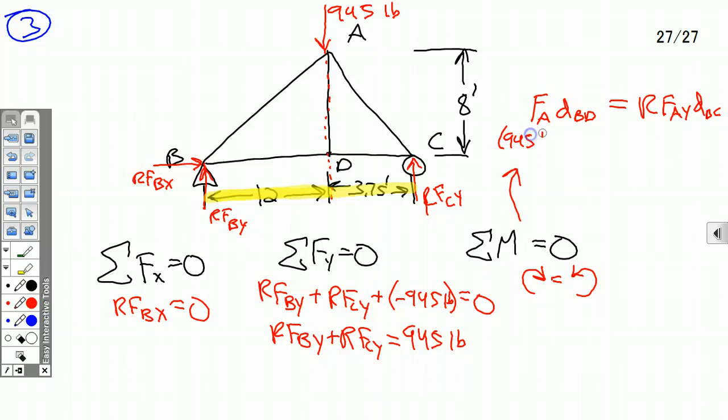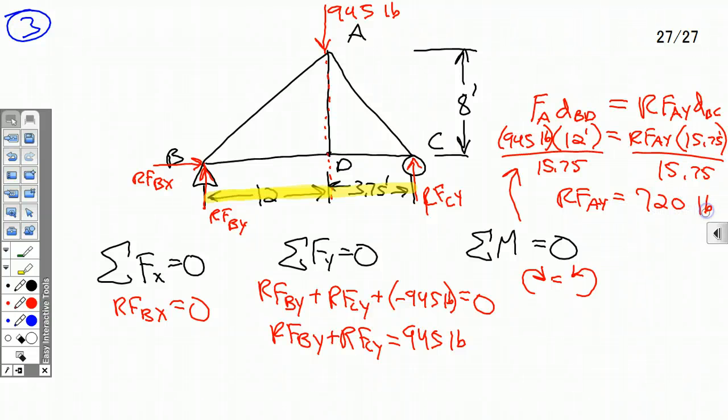Now let's plug in the numbers we know. We know this is 945 pounds. We know the distance from B to D is 12 feet. RF,A,Y, we don't know. But we do know the distance from B to C. And that is 15.75 feet. I just added them together. 15.75. So divide by that. Solve for RF,A,Y. 15.75. So RF,A,Y equals. Grab the calculator. 945 times 12 equals. Divided by 15.75 equals. 720 pounds. Worked out much nicer than I thought it would.